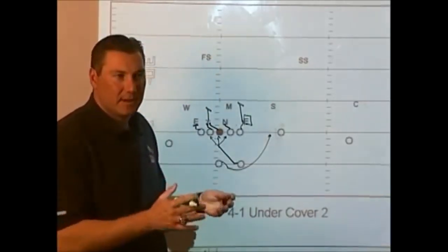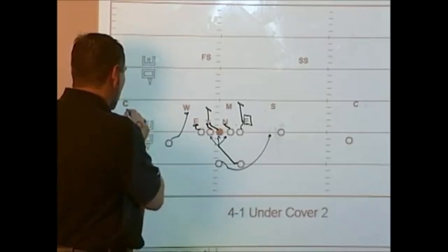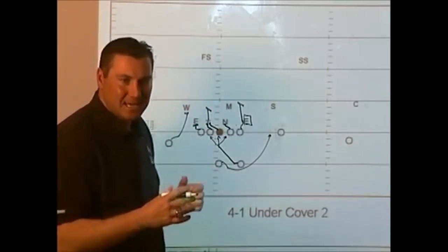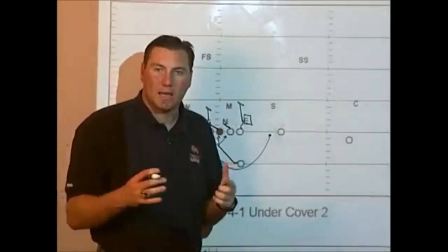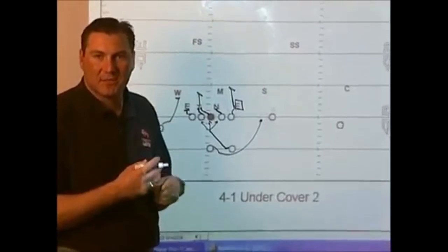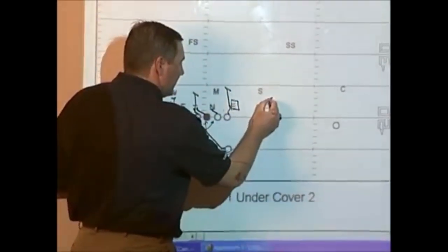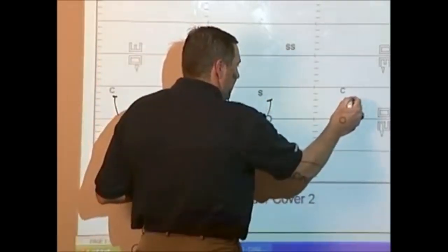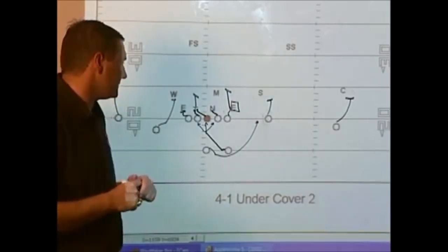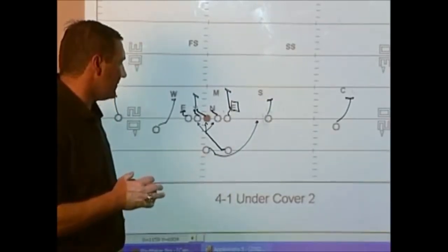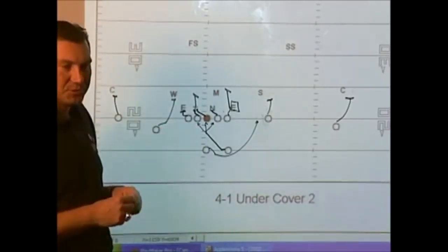Our receivers in the read play: anybody on the front side blocks as a front-side player for inside zone — they're going to block nose up inside number on their men. On the back side, our receivers will keep block, meaning they're going to block as if the quarterback keeps the ball on every single play. Their responsibility is to sit on the outside number of their defender and block as if the quarterback is keeping the ball. This is the base look for our 14 and 15 read.